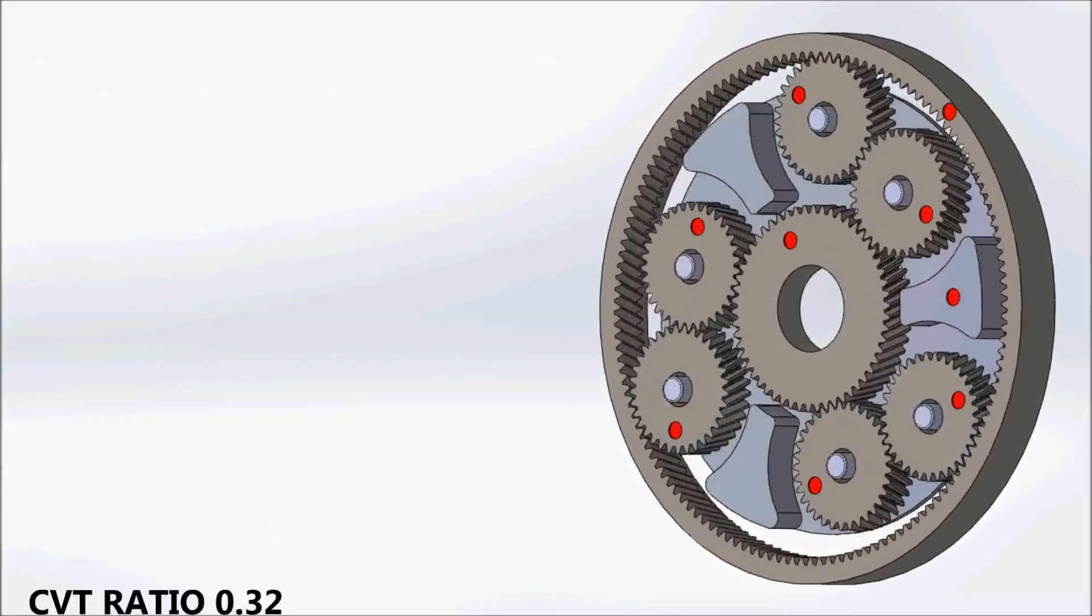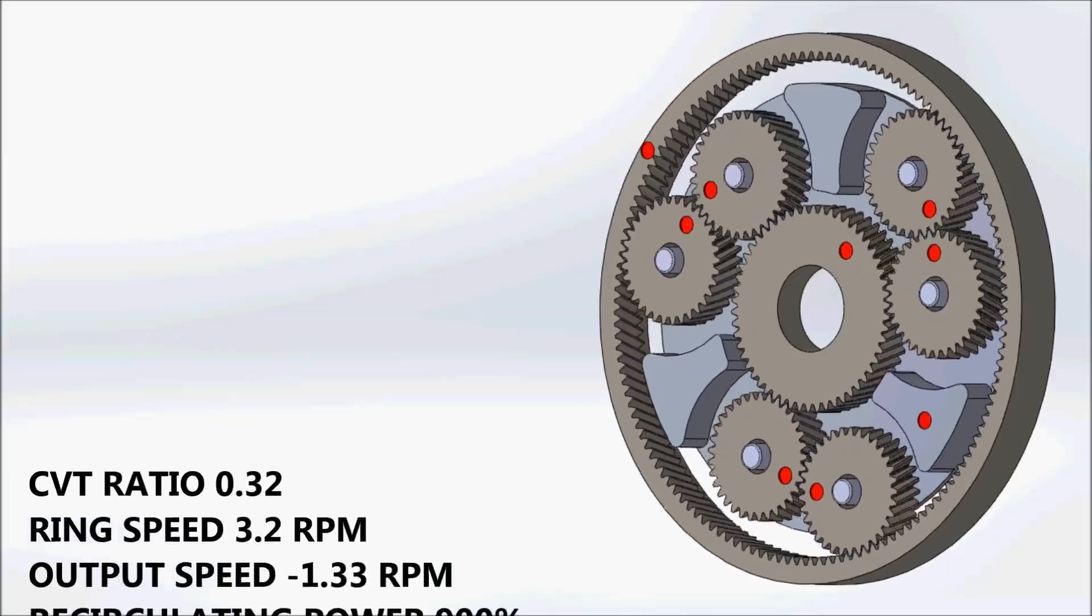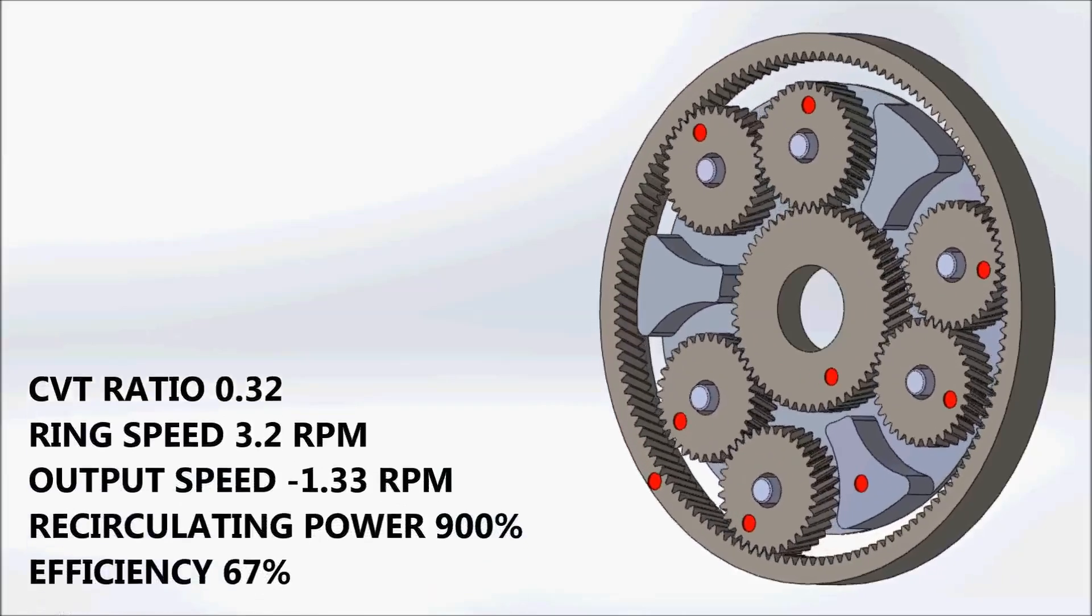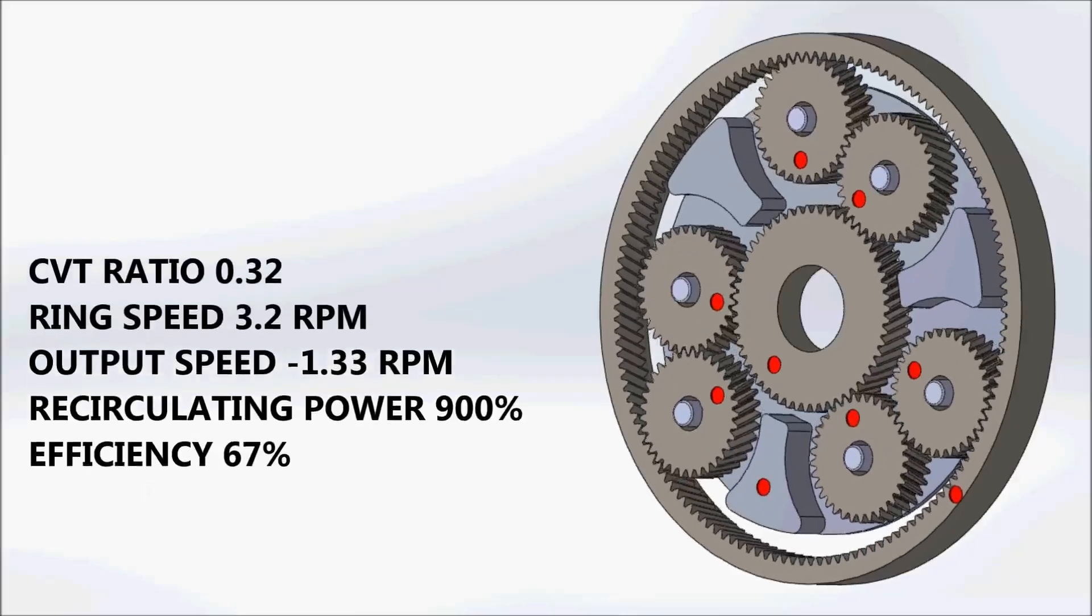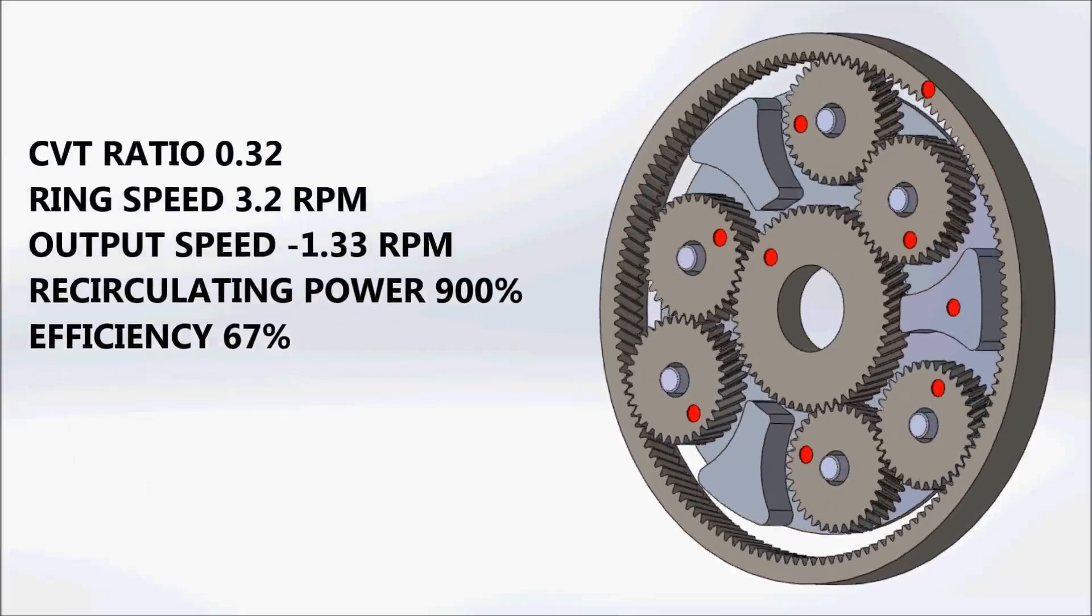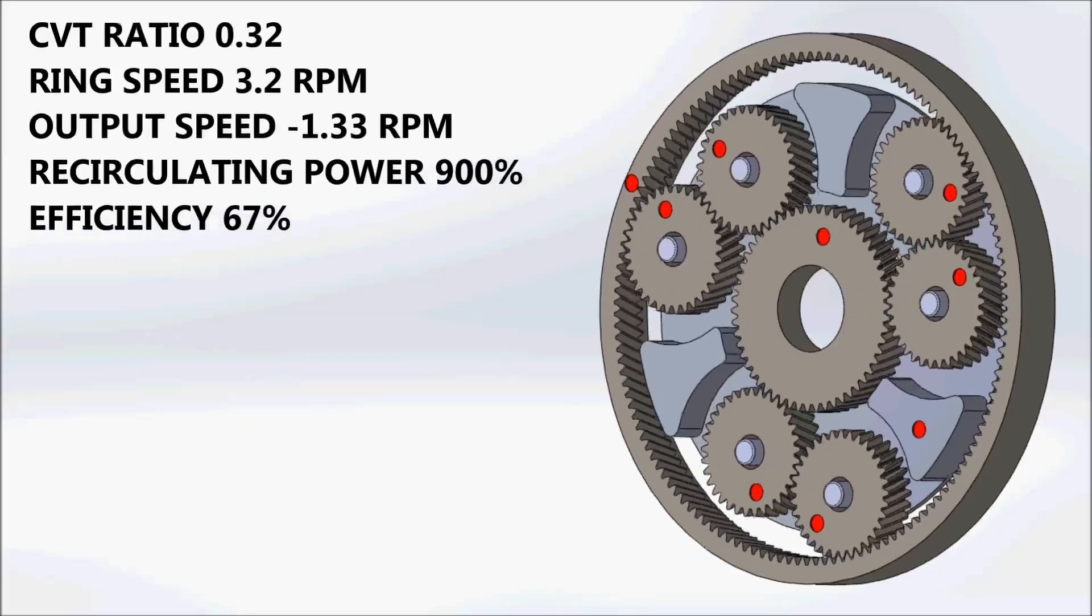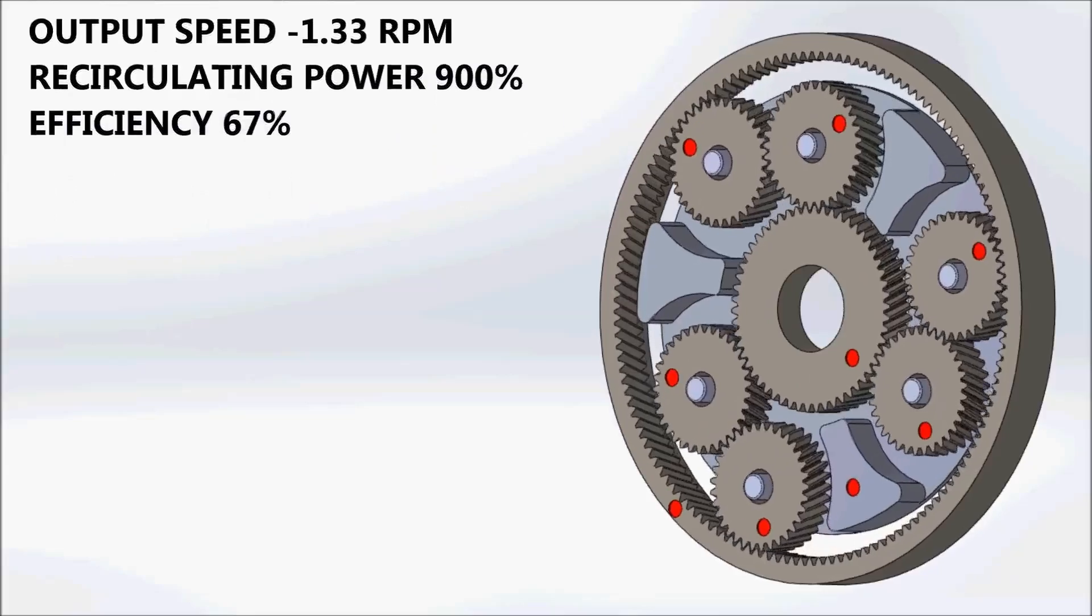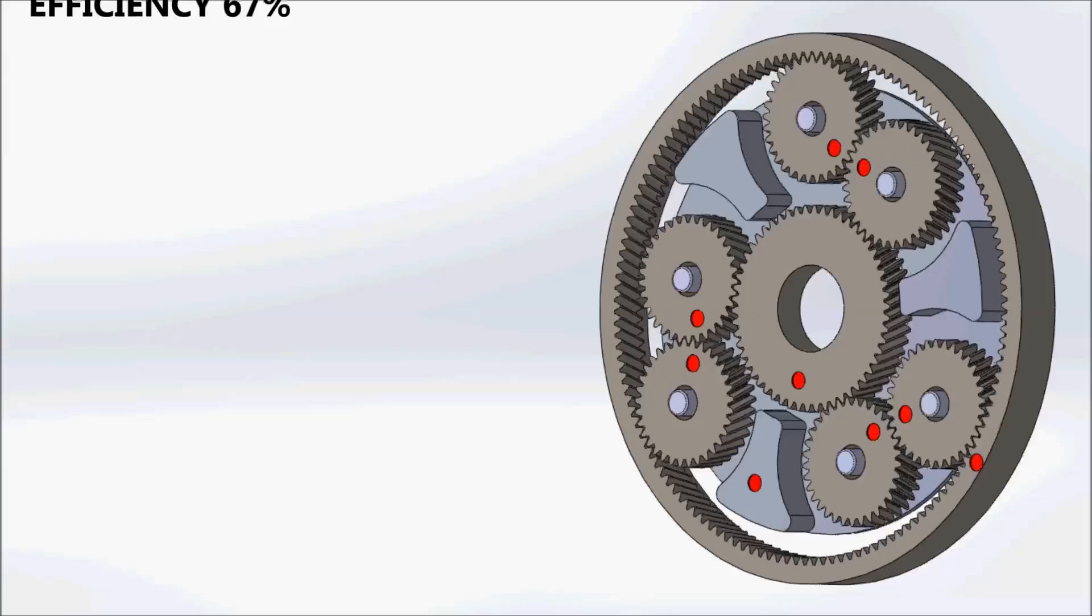When the CVT is in extreme low gear at a ratio of 0.32, and the input from the sun is 10 rpm, the output from the planet carrier is a reverse gear of 1.33. The vehicle is now driving in reverse at a moderate speed. The IVT is subject to high levels of recirculating power of 900%. This leaves the overall system efficiency at below 70%.